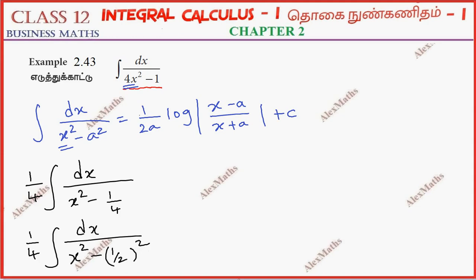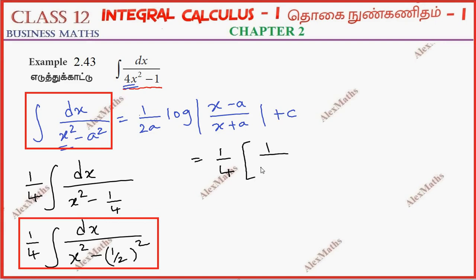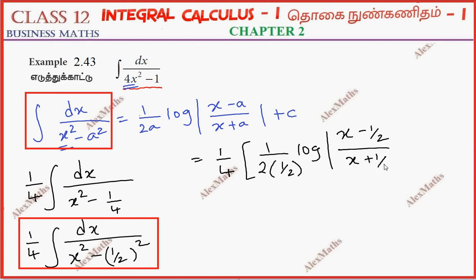Now we rearrange and apply the formula. So it becomes 1 by 4, times 1 by 2a log mod x minus a by x plus a, giving us x minus one-half by x plus one-half.